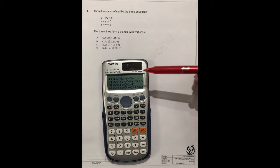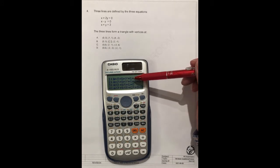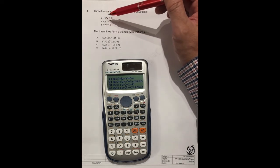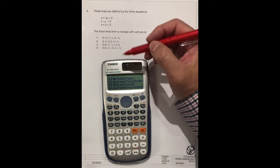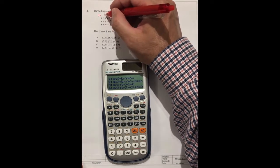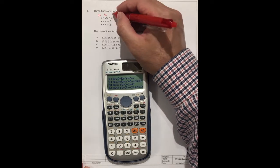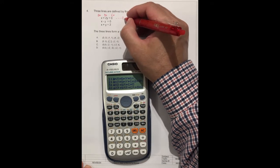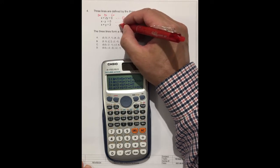It's Ax plus By equals C. You see in our question, it's only first order equations, so we can use number one. The first one is Ax, we can call this way A. The second one is B. After the equal sign is C. So we can define these equations: this is the first one, this is the second, this is the third.